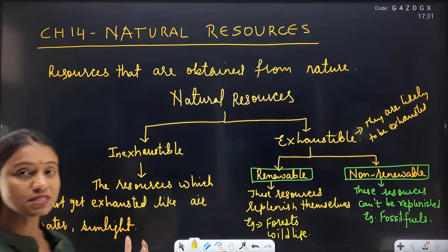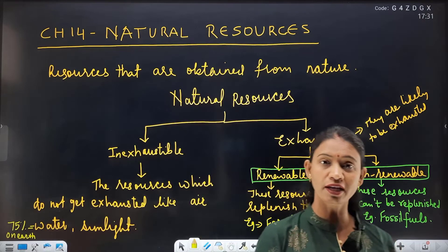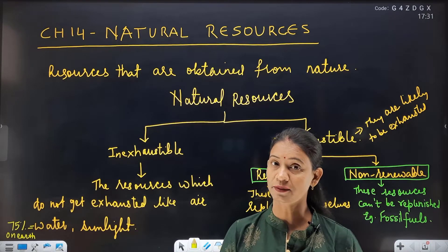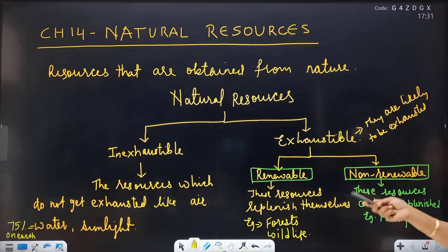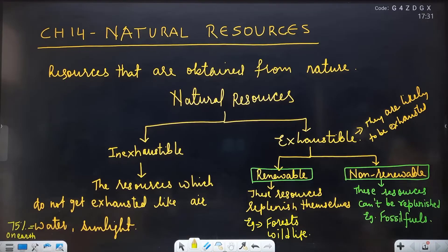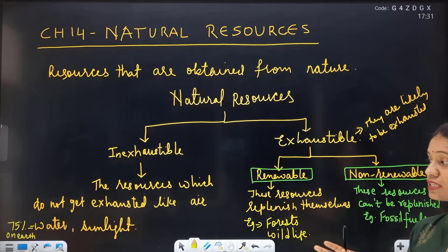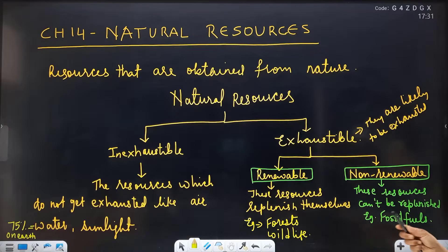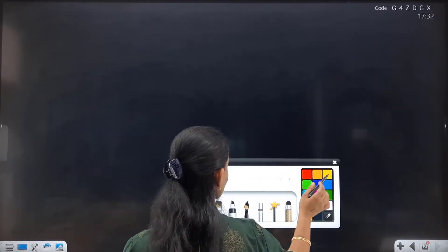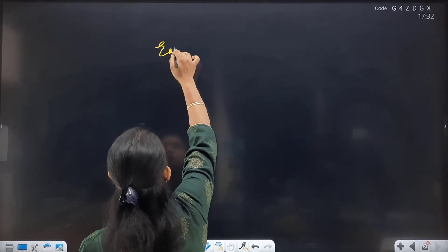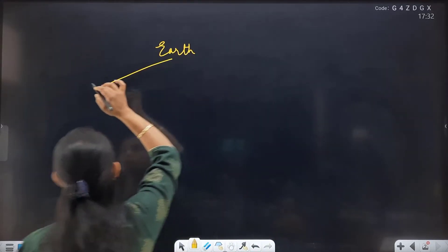Earth is 75% water — land toh kam hai aur water ka jo part hai voh bahut zyada hai. The distribution and availability of resources is not equal. Life-supporting conditions — life is only found on Earth, and Earth can be divided into three main parts.